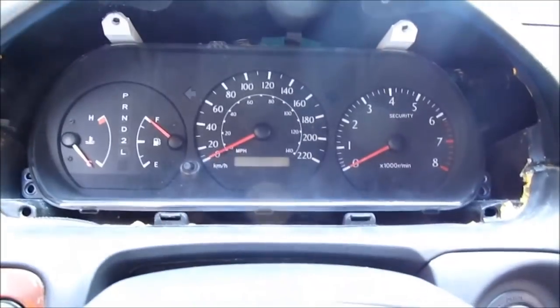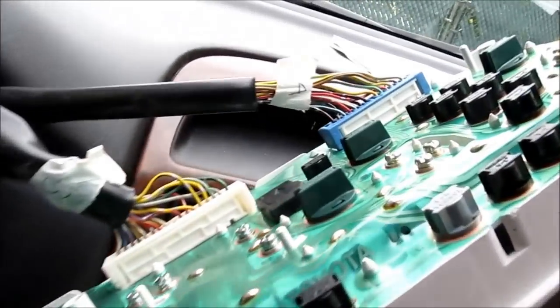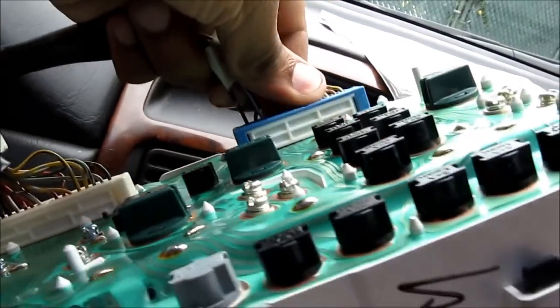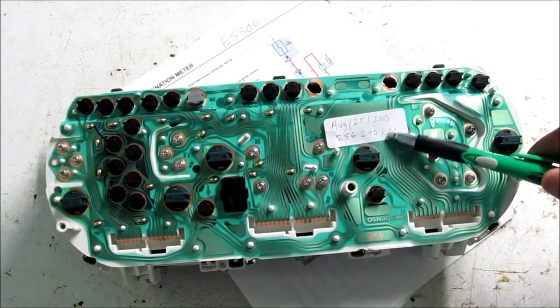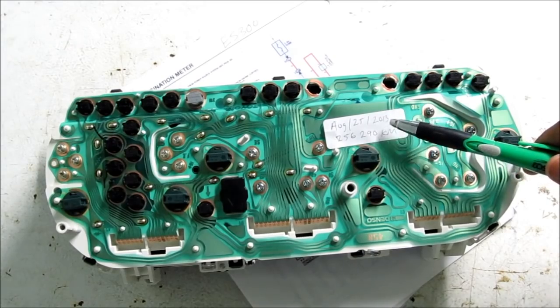And then we can pull out the instrument cluster. Now we can pull on the tabs at the back and squeeze and pull these connectors out. Good idea to write down the odometer reading on the old and the new odometer.